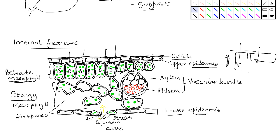In some plants the palisade mesophyll consists of several layers of cells in order to enhance light absorption — especially those plants that grow in areas with very little light, such as on the floor of forests or underwater. Such plants will have several layers of palisade mesophyll in order to enhance absorption of light.